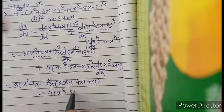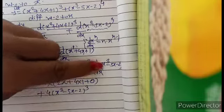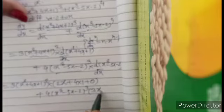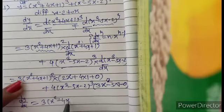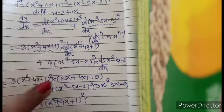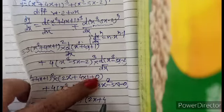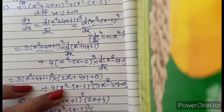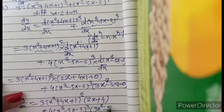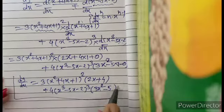Simplifying, dy/dx equals 3·(x² + 4x + 1)²·(2x + 4) plus 4·(x³ - 5x - 2)³·(3x² - 5). This is the final derivative of the given function.